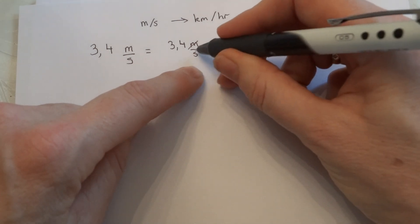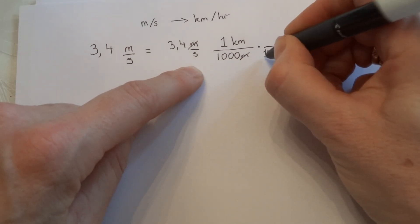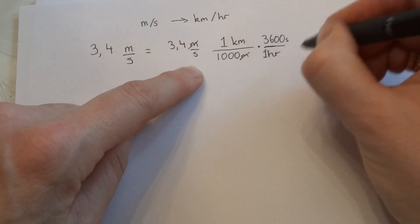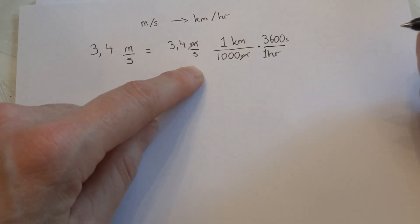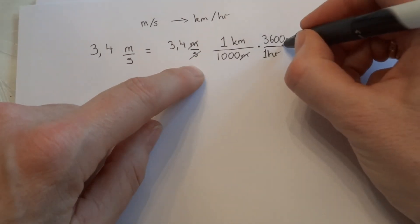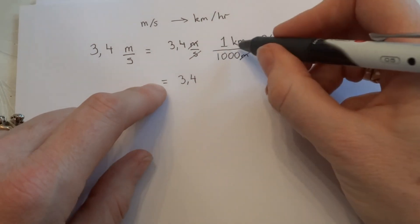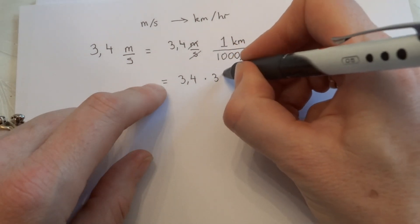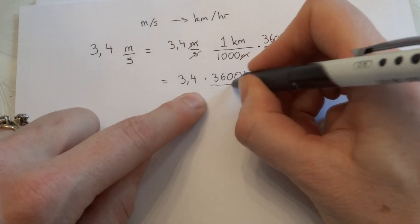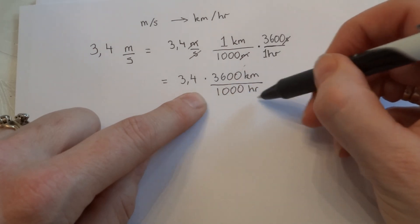And what I'd like to get down here, instead of seconds, I'd like hours — because it's per hour. So if I put 1 hour down here, I can actually multiply the top of this by 3,600 seconds, because 1 hour is the same as 3,600 seconds. Now the second units cancel as well. So what I get is 3.4 times 3,600 kilometers divided by 1,000 hours, and now I've changed my units to kilometers per hour.